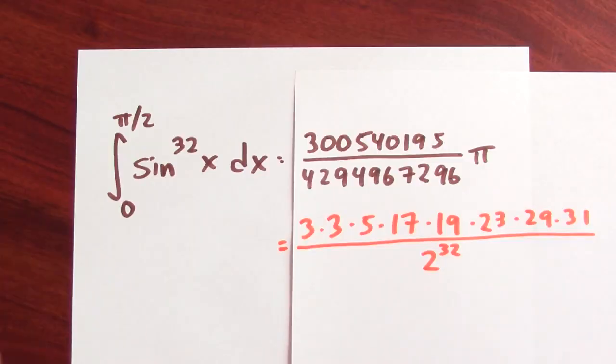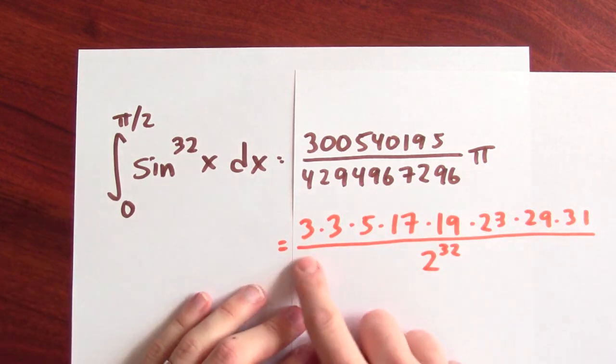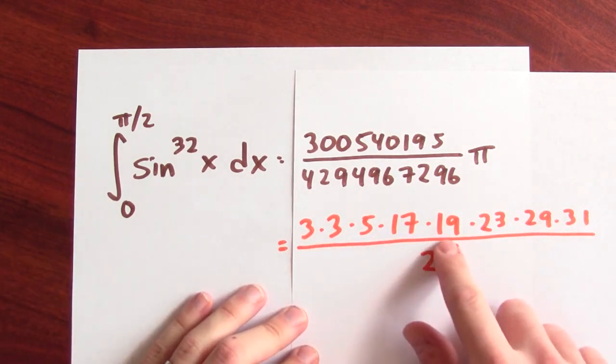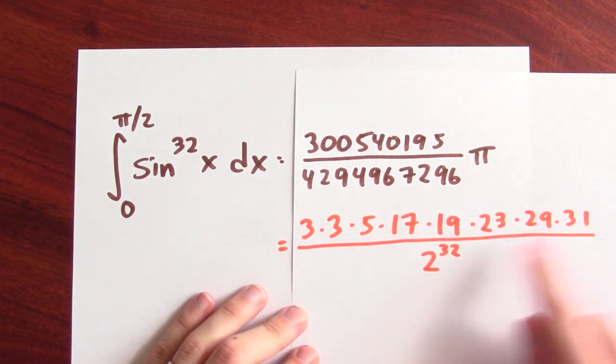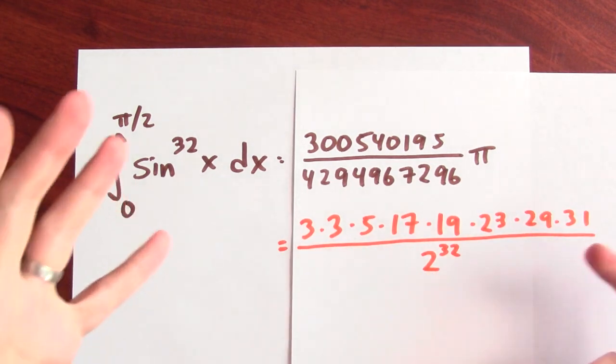And yet, there's more going on here. In fact, this ends up being 3 times 3 times 5 times 17 times 19 times 23 times 29 times 31, all over 2 to the 32nd power. All those numbers suggest something's going on here. That could hardly be an accident.